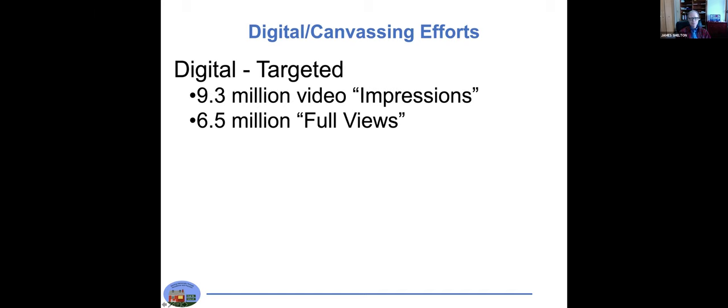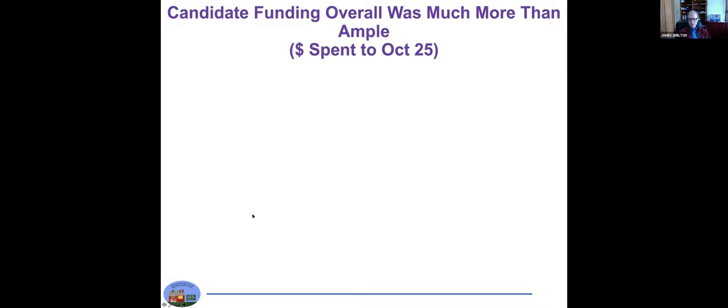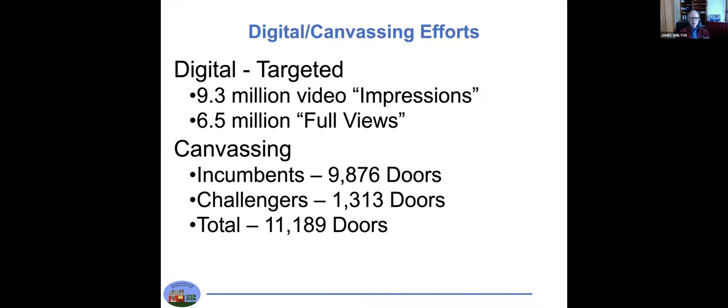In terms of canvassing, our objective was a reach objective of 10,000 doors. We actually did over 11,000 doors. Notice that most of the support went to incumbents, and that was our deliberate strategy. Same thing with the digital once we had done the initial funding for the challengers.